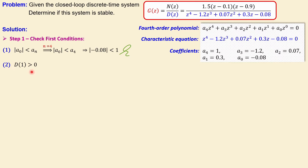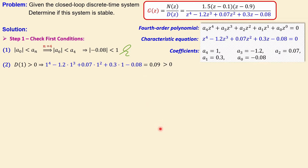The second condition requires that the characteristic equation evaluated at z equals 1 must be larger than zero. Substituting z equals 1 into the denominator D(z), we get 1 to the power 4 minus 1.2 times 1 to the power 3, and so on. The result is 0.09, which is indeed larger than zero, so the second condition is also met.